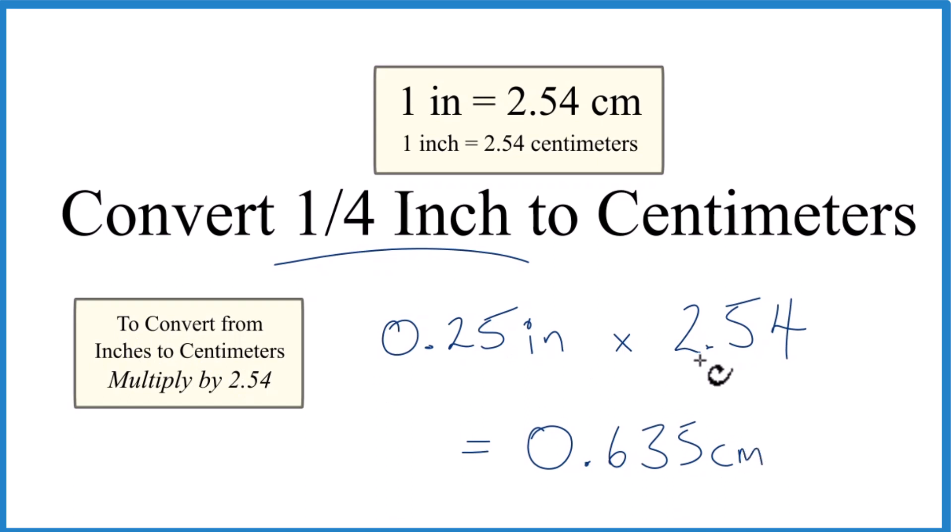If you're concerned about the units, which you should be, we know that there are 2.54 centimeters in one inch, so centimeters per inch. When we multiply, inches on the top and bottom cancel out. That's why we end up with centimeters, so we know that worked out.